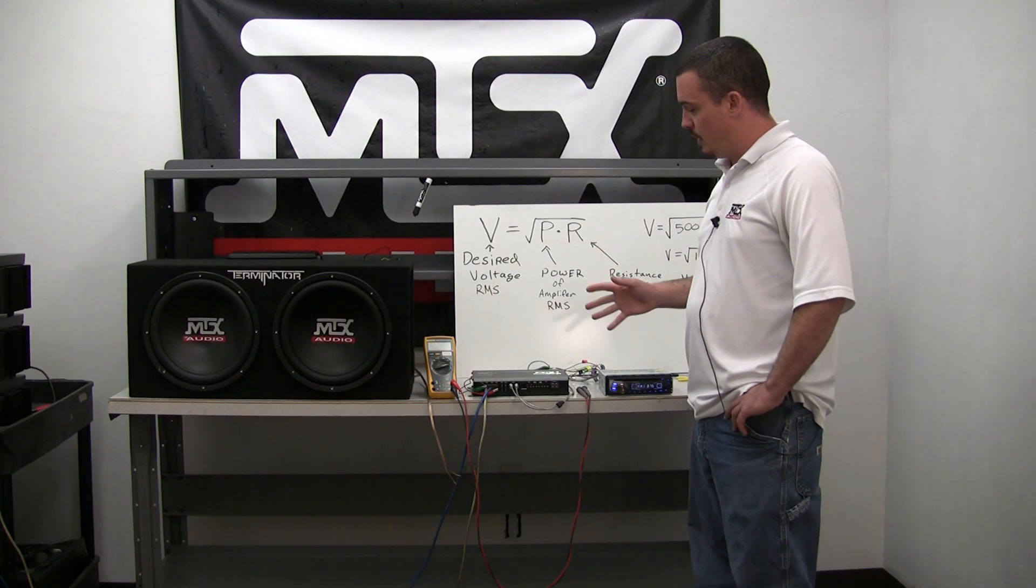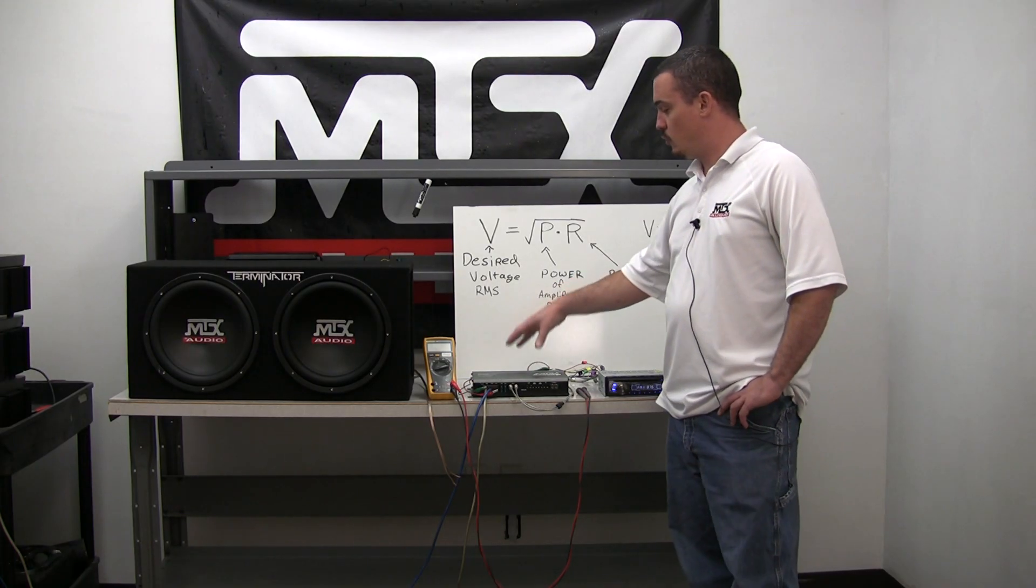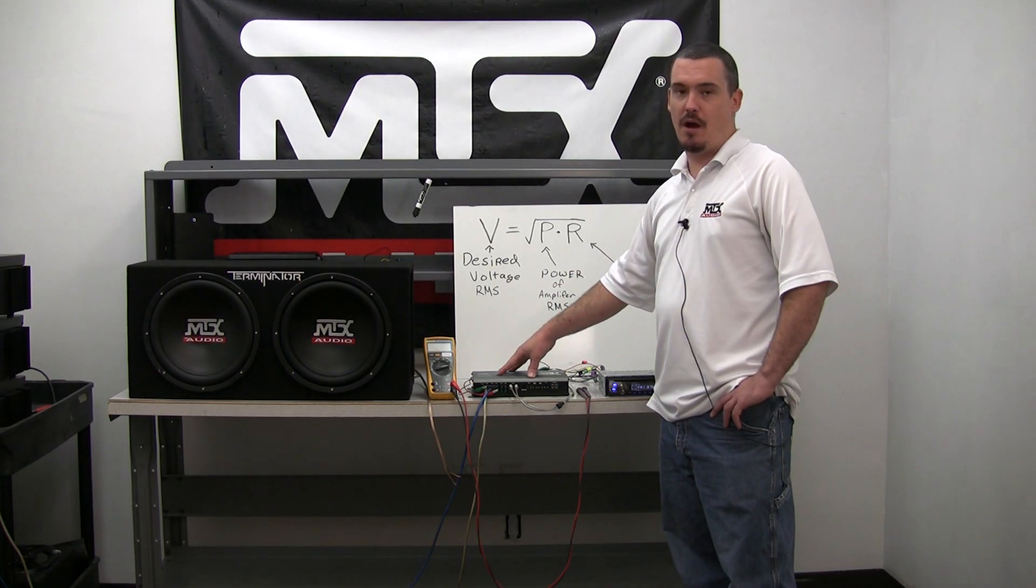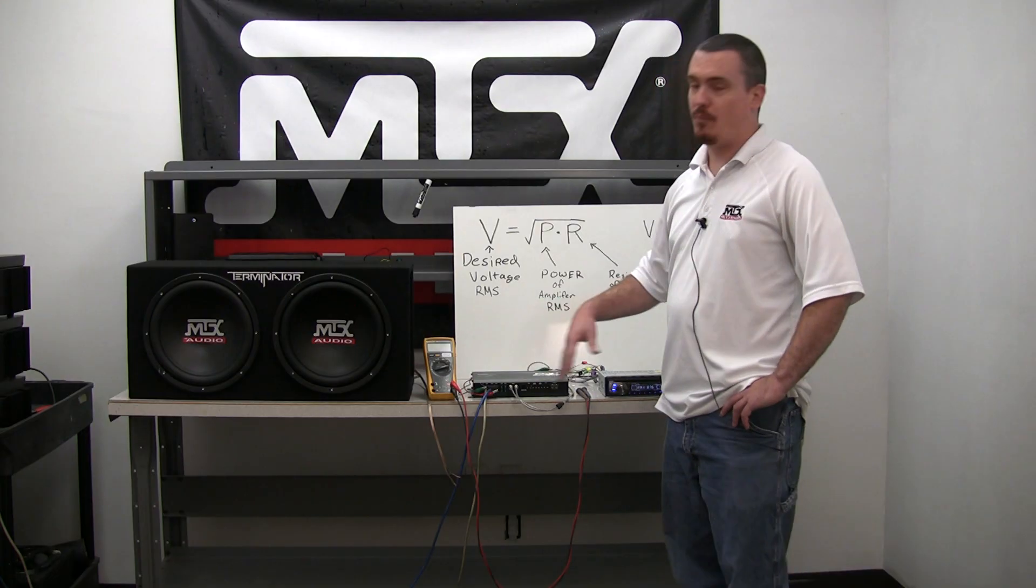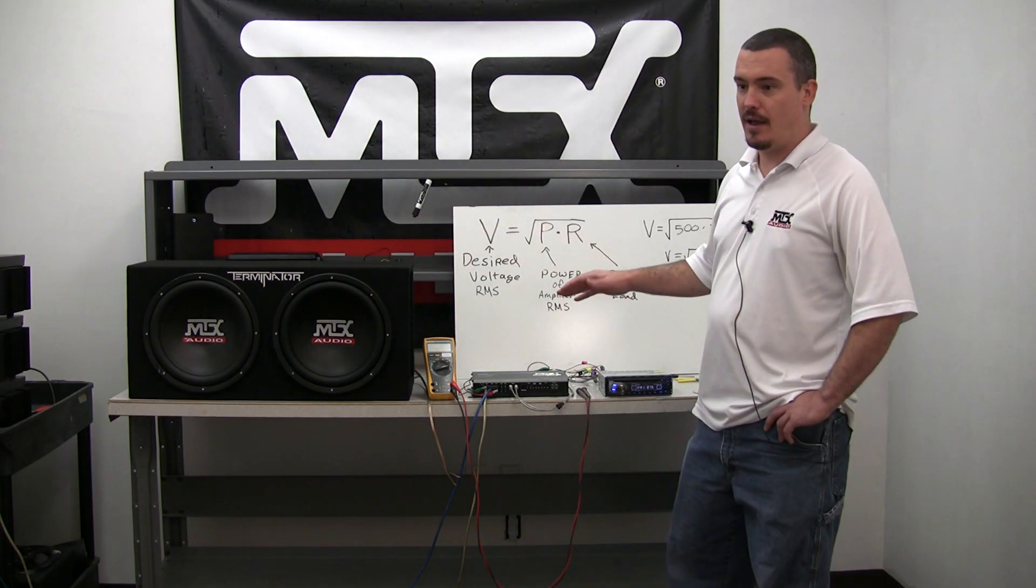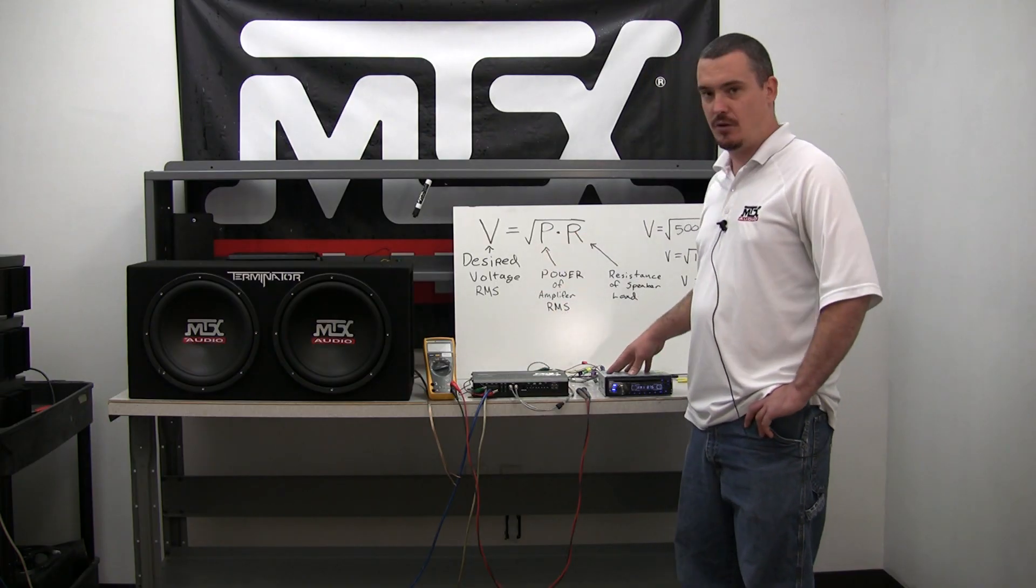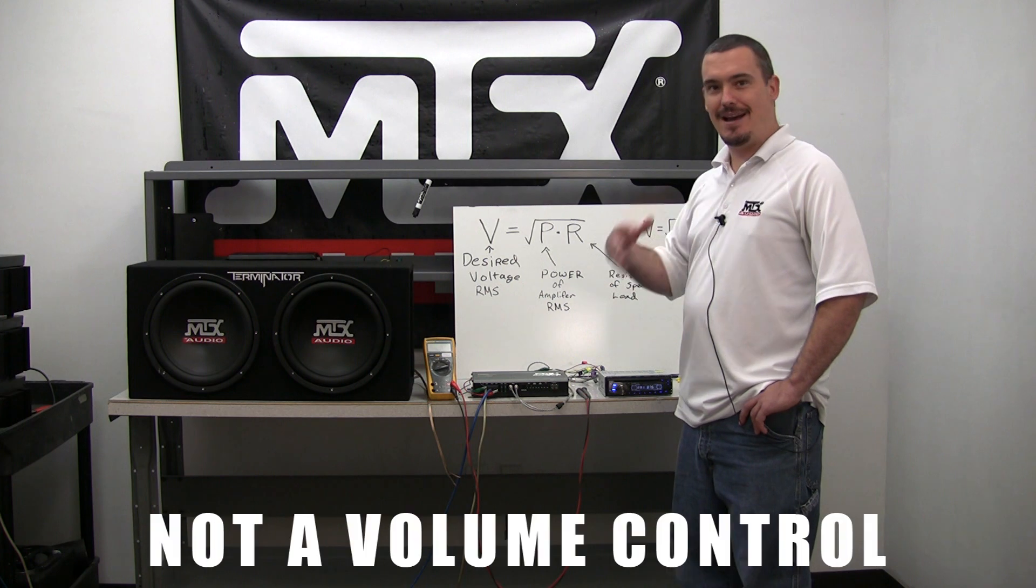It's important that we set the gain controls appropriately in order to ensure that we have the correct output power coming out of the amplifier and the proper output power matched to the speakers. The gain control is used to level match the amplifier to the head unit or source unit, and it's not a volume control.